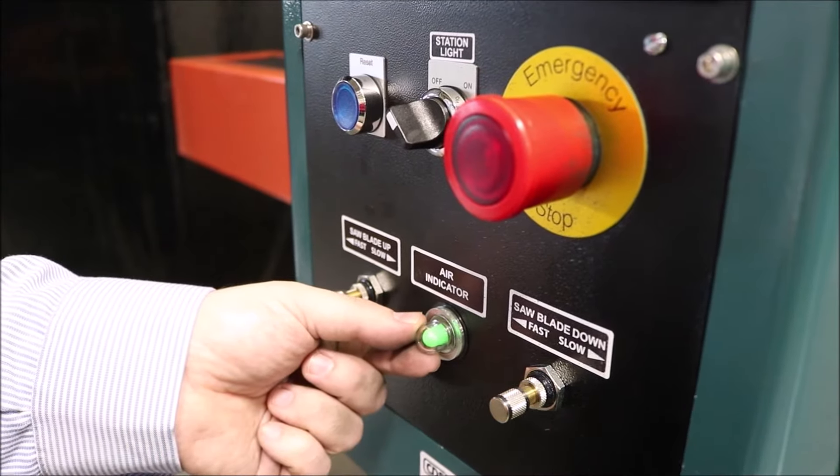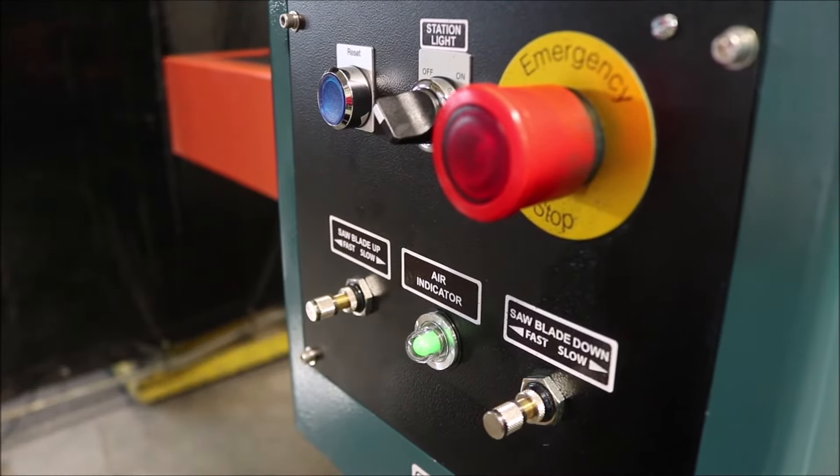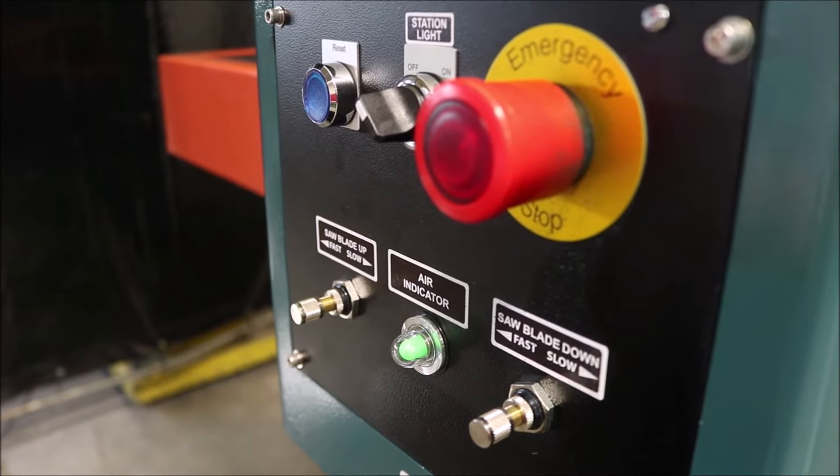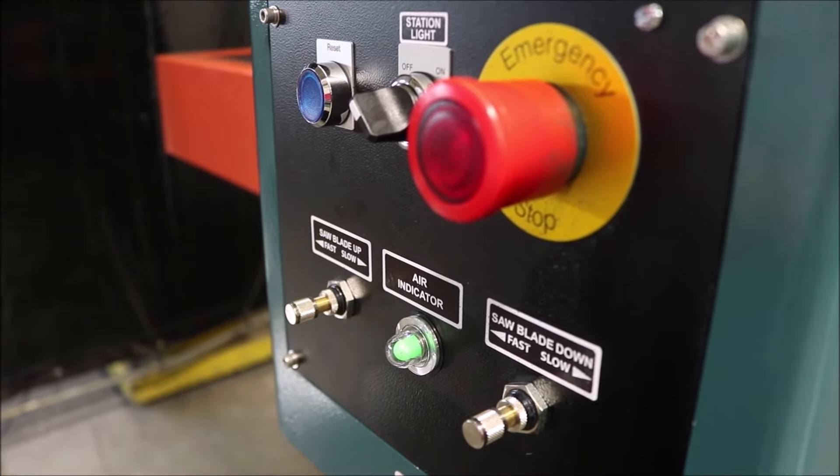The air indicator is only to tell you if you have air attached to the machine. If the green bubble is not out, it indicates that your machine has no air.